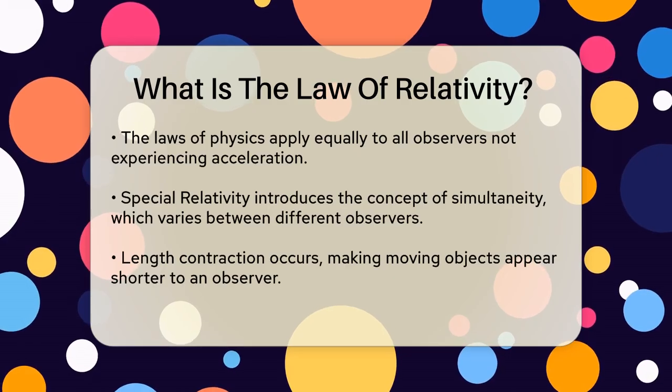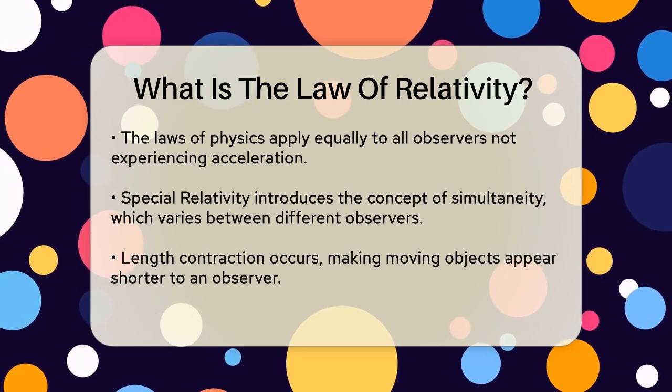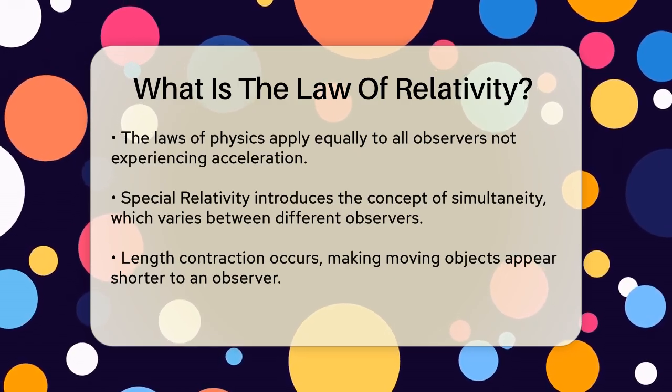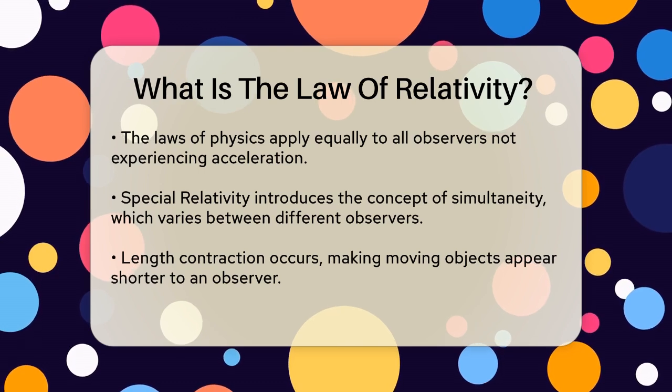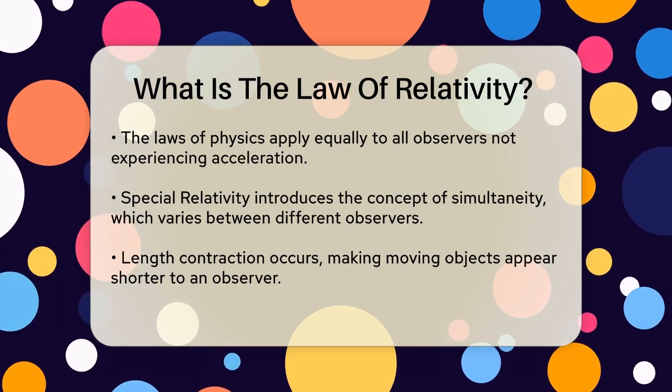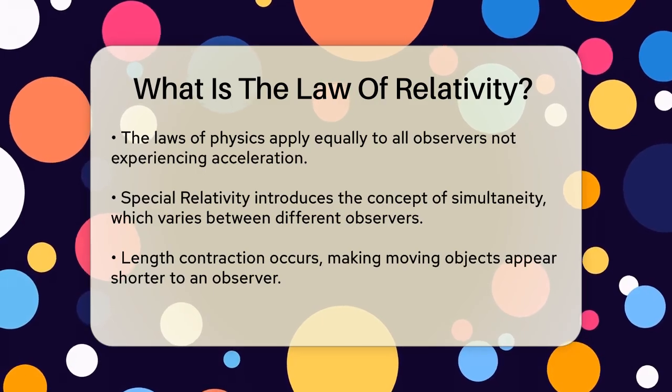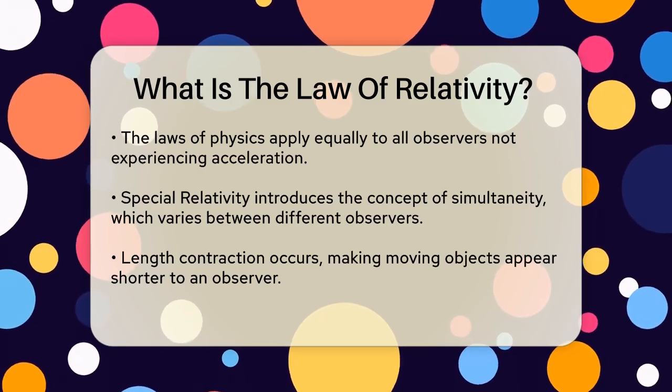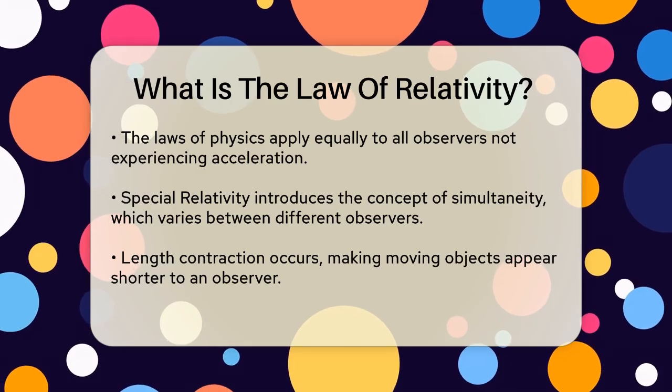Special relativity also introduces some interesting concepts, like the relativity of simultaneity, where two events that are simultaneous for one person may not be for another in a different frame of reference. It also explains length contraction, where objects appear shorter when they are moving relative to the observer.